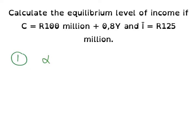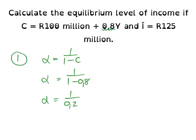We are going to solve question one based on three steps. Step one: solve our multiplier. Step two: solve our autonomous spending. Step three: plug it into our formula and calculate equilibrium income. Our multiplier is therefore alpha, which is equal to one divided by one minus c. Remember that c is our marginal propensity to consume, indicated by 0.8 in our consumption function. We therefore have alpha equal to one divided by one minus 0.8.